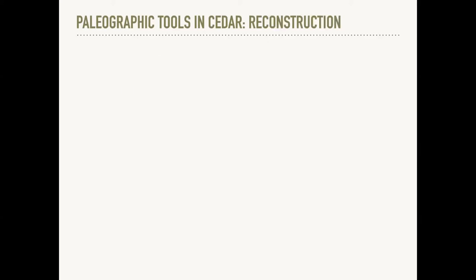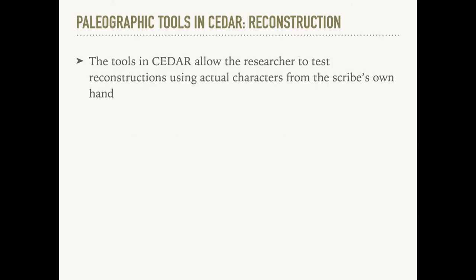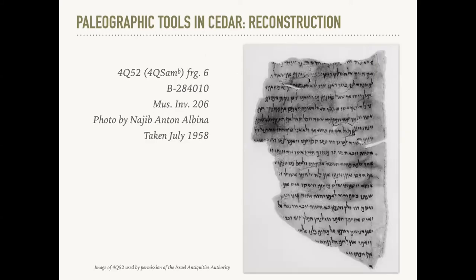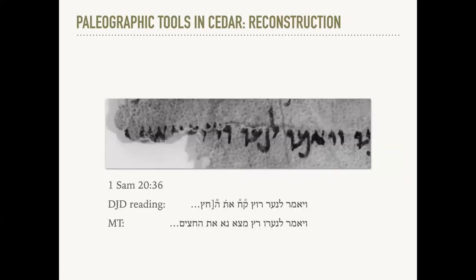I'd like to transition now to demonstrating tools for reconstructing damaged manuscripts. These tools allow you to test reconstructions using actual characters from the scribe's own hand rather than having to rely on averages or approximations, representing a significant methodological advance over most previous methods of reconstruction. I'm going to demonstrate these tools on a fragment of 4Q52 — this is our largest fragment from this scroll, numbered fragment 6 in the DJD volume. Unfortunately, this fragment has gone missing, so it was not re-imaged with the rest of the fragments in the near 2010s. This infrared photograph from 1958 is our only record of it. The resolution isn't as high as we would like and there's some shadow around the edges of the parchment.